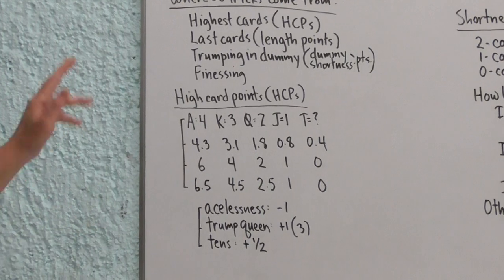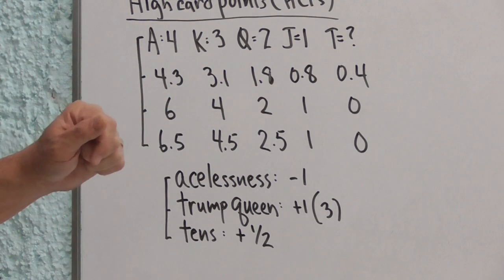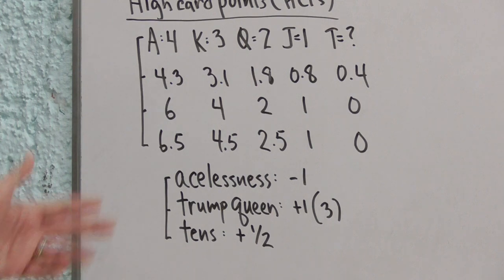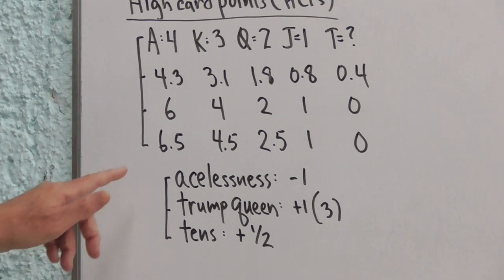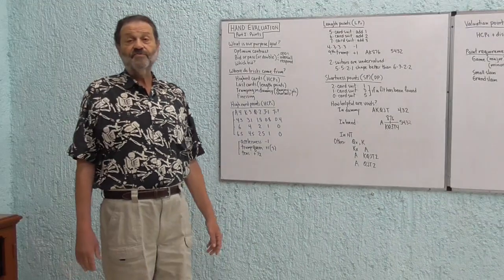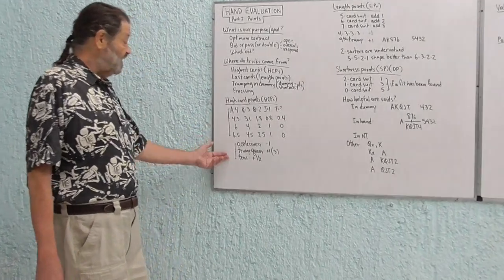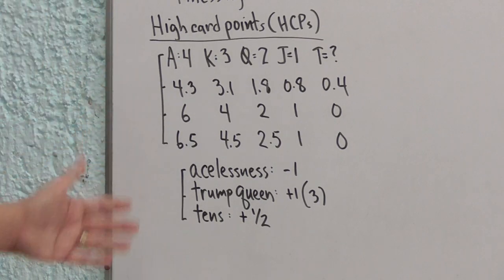Now, here are some of those modifications. Because aces and kings, which are sometimes called primary honors, are undervalued in the 4, 3, 2, 1 system. They really are worth a little bit more than 4 and 3. Hands that are aceless, don't have an ace in them, we should deduct a point for that. If the strength of our hand is mostly in kings, queens, and jacks, especially queens and jacks, that hand's just not as good as if it had aces and kings for the same number of points. So for acelessness, let's deduct a point. Let's also give ourselves an extra point for the trump queen. If queens are worth 2, the trump queen is going to be worth 3. That's a queen that's always useful. We're going to give ourselves an extra point for the trump queen. And finally, we should probably give ourselves a half a point for tens. If your hand is rich in tens, it's a better hand than one that it isn't.